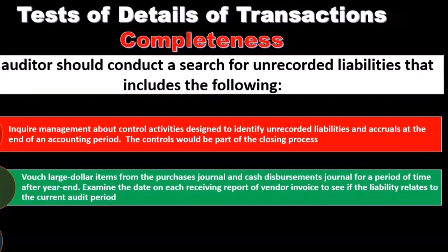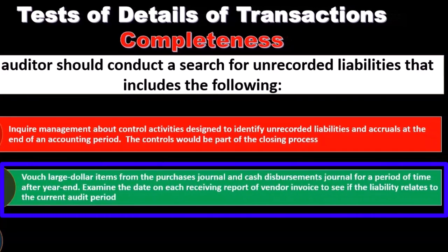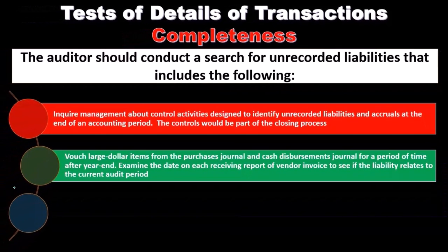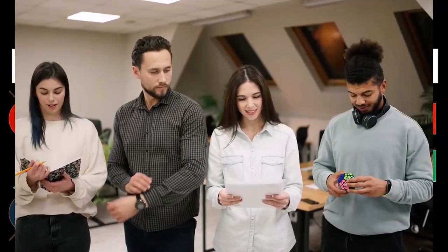We vouch large dollar items from the purchases journal and cash disbursements journal for a period of time after year end. Because we're doing the audit as of, say, December 31, we are performing the audit at some point after that date, so we can look at transactions that happened after the year closed and use them as part of our testing process.